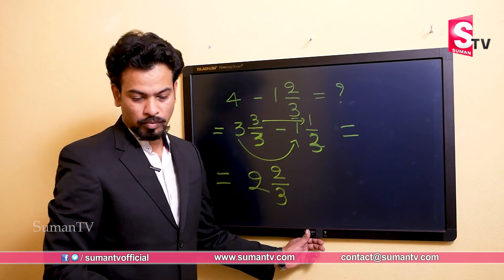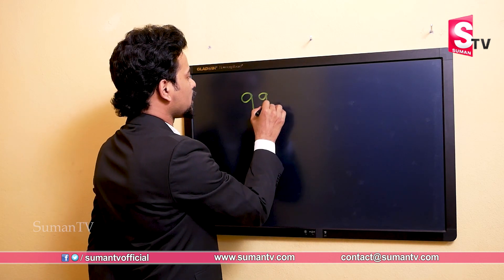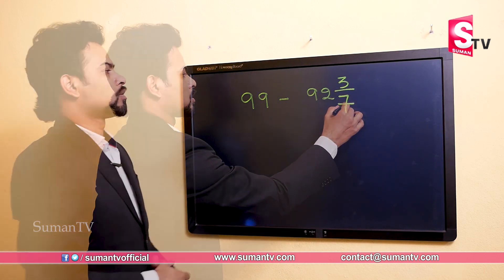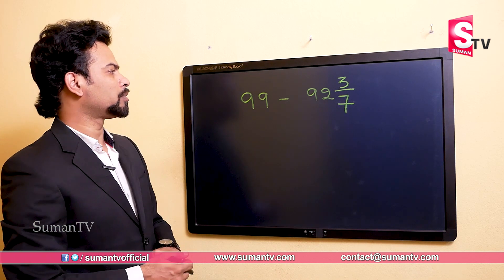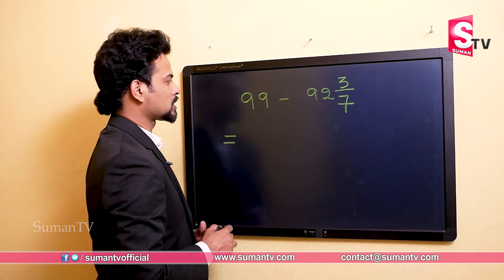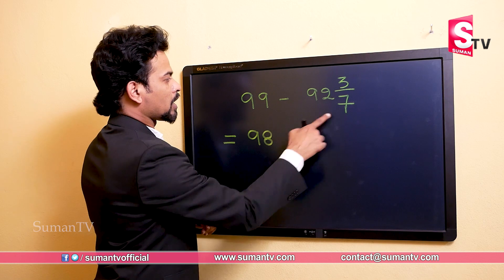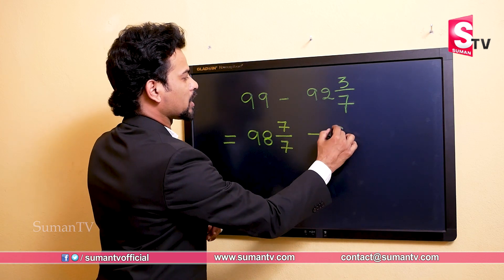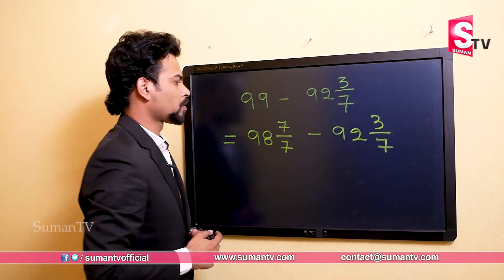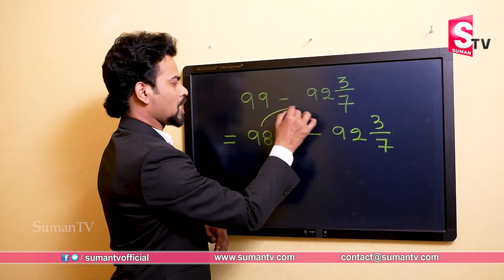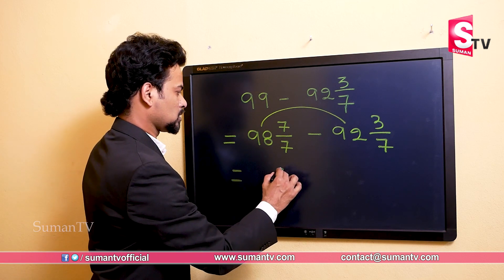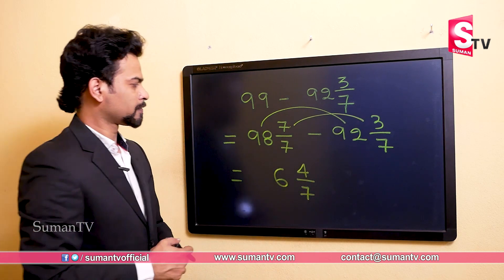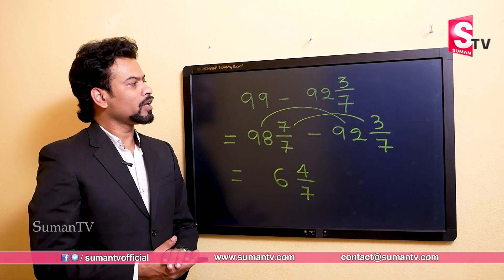Let's do one more example so you can understand: 99 minus 92 and three by seven. In a general process this looks like a very big problem, but through this technique we can do it easily. We take 98 and seven by seven here, minus 92 and three by seven. We subtract 98 minus 92, which is 6, and seven minus three is four, so the answer is 6 and four by seven.